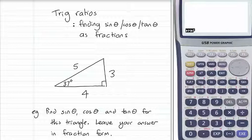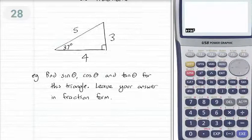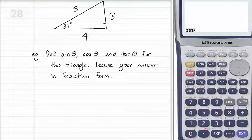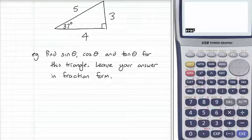Sometimes we'll be asked to leave our answer as a fraction, sometimes as a decimal. When they give you a triangle and just ask you to find sine theta or cos theta, they're just asking for the ratio for that triangle. They're not asking you to find anything complicated.